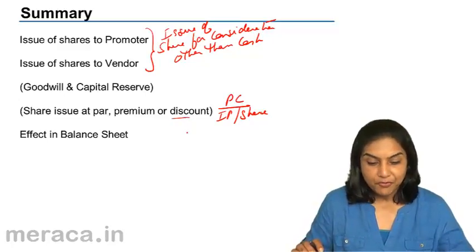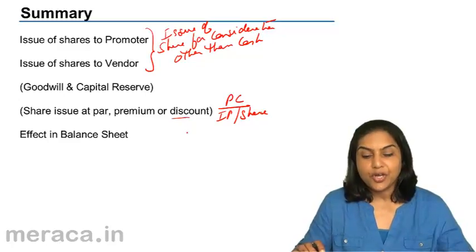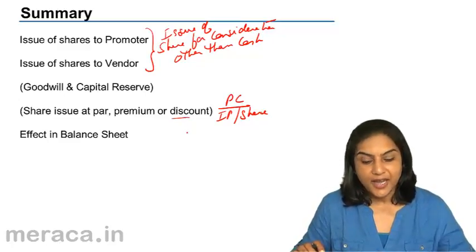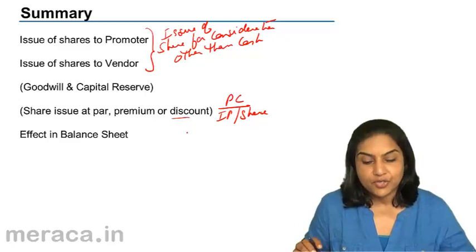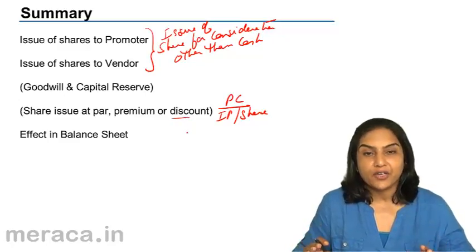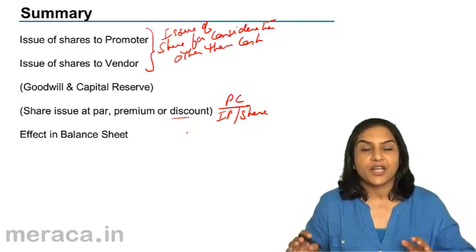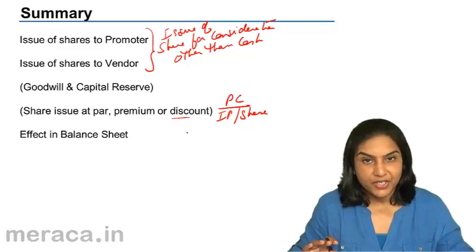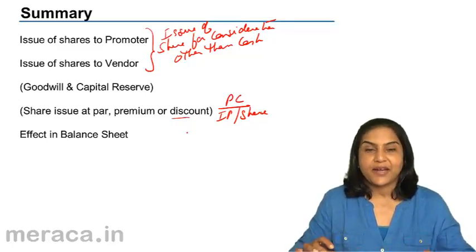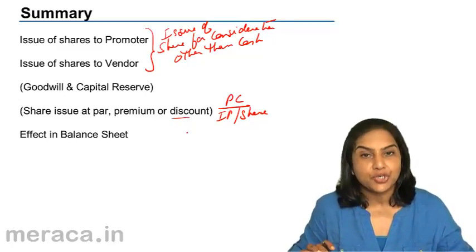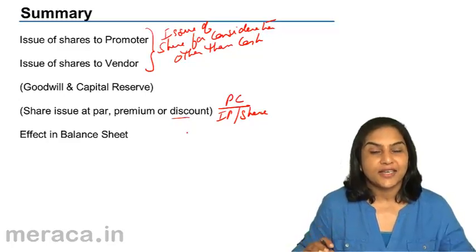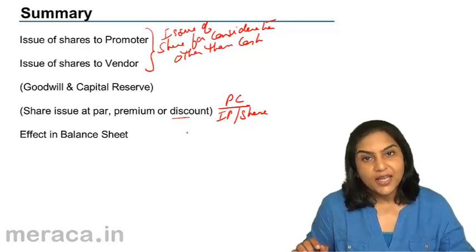As we said before, whenever shares are issued for consideration other than cash, whether it is to promoters or whether it is to vendors, a contract of sale of service or a contract of sale has to be produced before the registrar, and this fact that so many shares have been issued for consideration other than cash must be disclosed in the balance sheet.